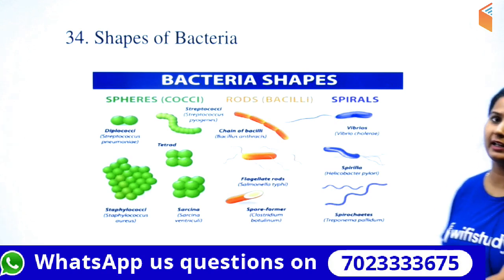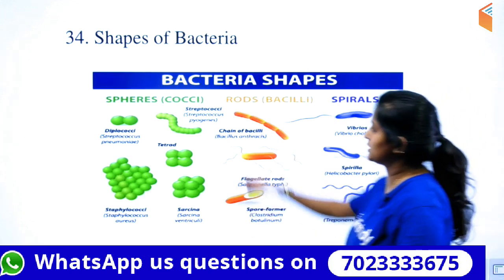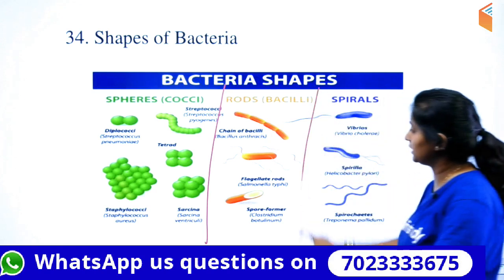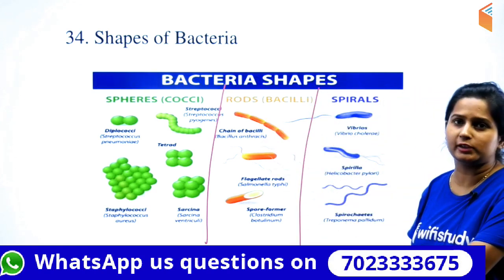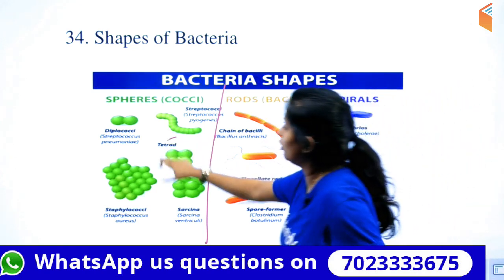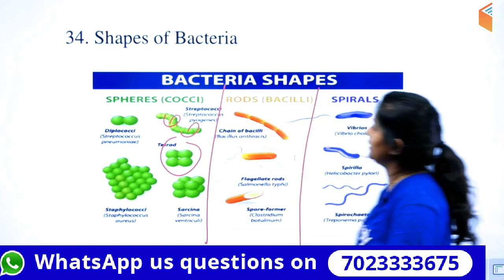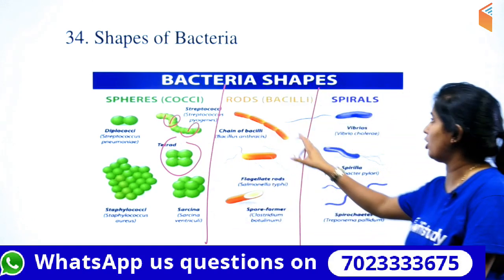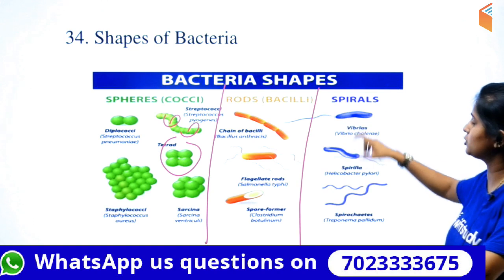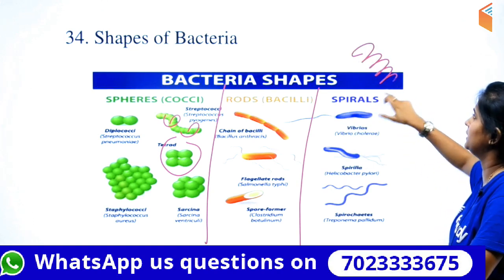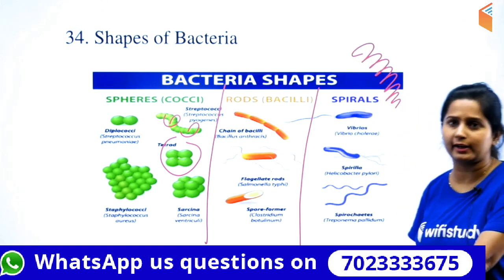The shape of bacteria: cocci are gold/spherical shape; bacillus is rod shape; and spiral bacteria are shown that way. Vibrio cholerae is one example you should remember.